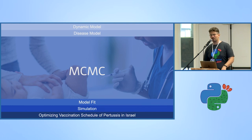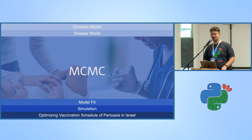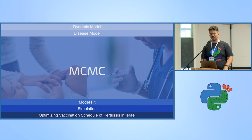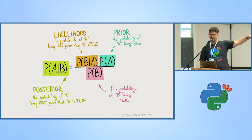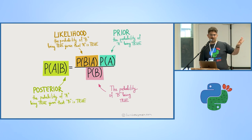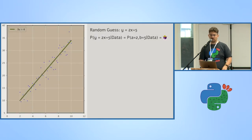Now we can take a break from dynamic models and talk about MCMC. MCMC is a statistical sampling method whose job is to fit anything to data. The main use case will be fitting disease data to disease models. MCMC is based on Bayesian inference, which in turn is based on one formula everyone knows, essentially Bayes' theorem.